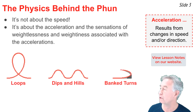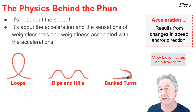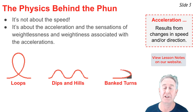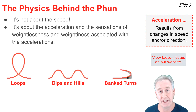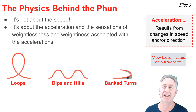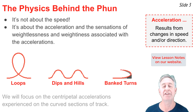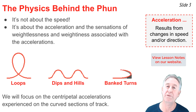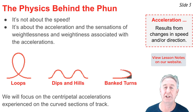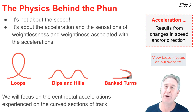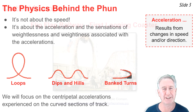A roller coaster ride is famous for these loops, these small hills and dips, and these bank turns. It's during these sections of track that we experience centripetal acceleration. In this video, we'll focus on centripetal acceleration experienced during these curved sections of track and how it produces thrill.